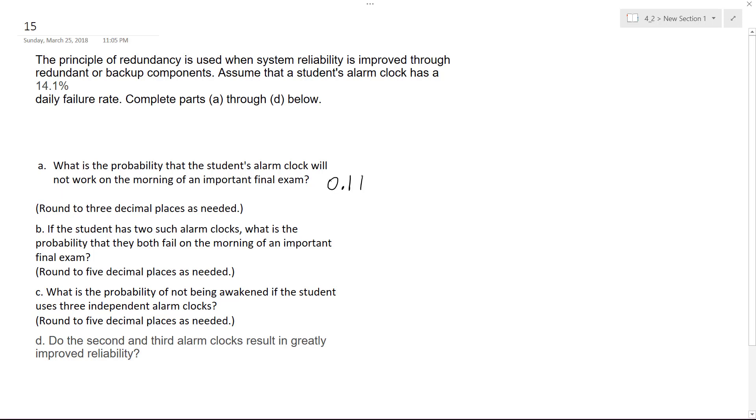That's rounded to three decimal places. If the student has two such alarm clocks, what is the probability that both will fail in the morning? So all you do in this case is 0.141 raised to the second, and what we end up with rounded to five decimal places is 0.01988.